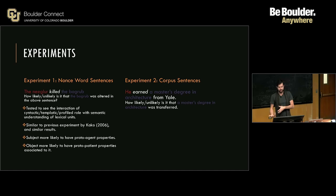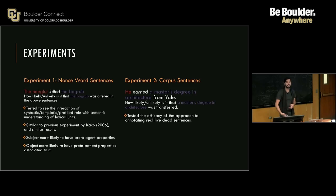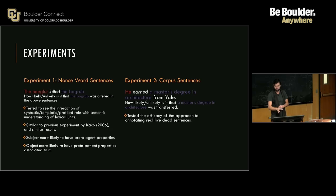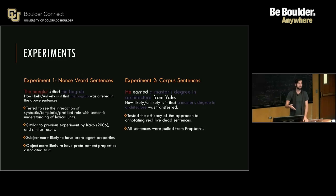In experiment two, they took actual corpus sentences — such as 'He earned a master's degree in architecture from Yale' — and then asked 'How likely or unlikely is it that a master's degree in architecture was transferred?' Again, testing one of those features. They used all the different questions for it. This tested the efficacy of the approach to annotating real sentences. The sentences were actually pulled from PropBank, which was good because they were already labeled for their semantic roles — giving them the capacity to test the annotations against the semantic role labels that preexisted for them.